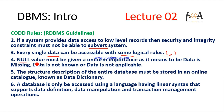The fourth rule is that null values must be given uniform importance. Null may mean data is missing, data is not known, or data is not applicable — all are treated as null. Every null should be given uniform importance so there is no ambiguity in the table about what null means.